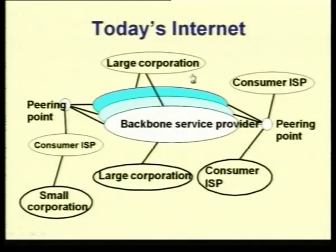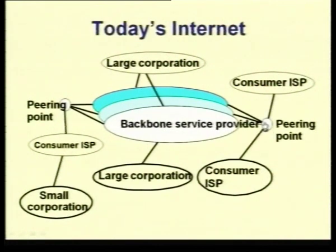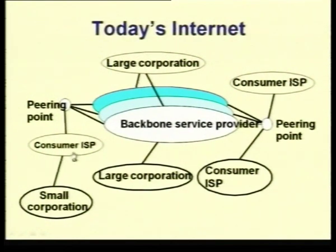Looking at today's internet scenario, you do not have just one single backbone service provider, but there are multiple backbone service providers, and large corporations connect to more than one. These backbone service providers talk to each other through what is called a peering point. Many internet service providers — consumer ISPs — connect to these peering points and provide services to large and small corporations.